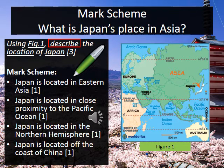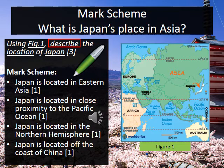How did you get on? Give yourself a mark for each of the points on the screen that you have included. Japan is located in Eastern Asia. Japan is located in close proximity or near to the Pacific Ocean. Japan is located in the Northern Hemisphere — the hemisphere being the two halves of the world that are bound by the equator. And Japan is located off the coast of China.